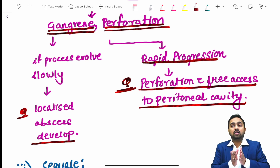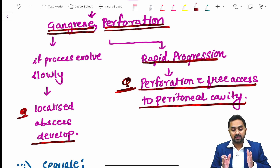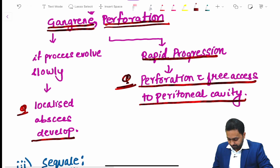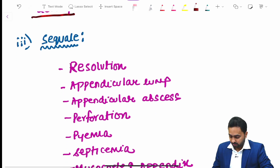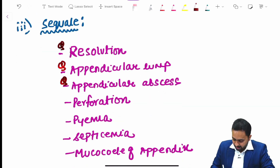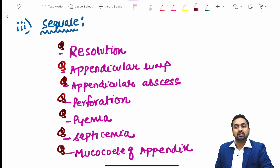The process of how acute appendicitis converts into an abscess or perforation leads to various sequelae, including resolution, appendicular lump, appendicular abscess, perforation, pyemia, septicemia, and mucocele of the appendix.